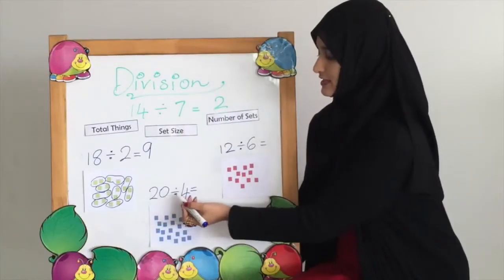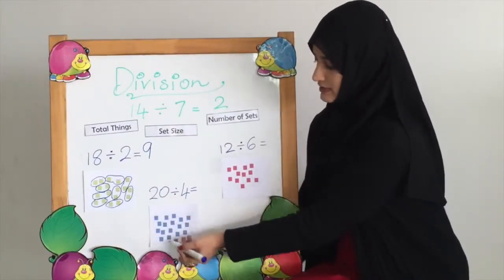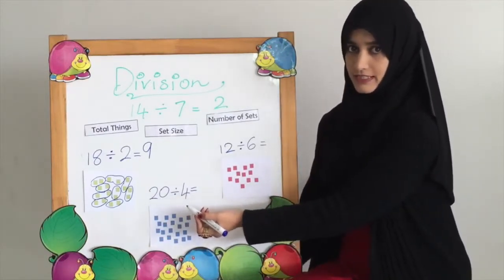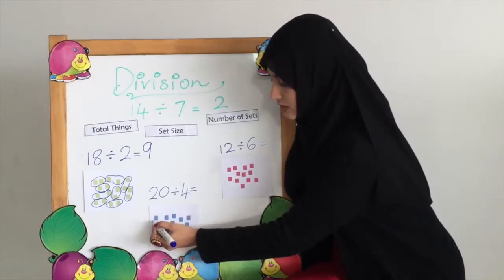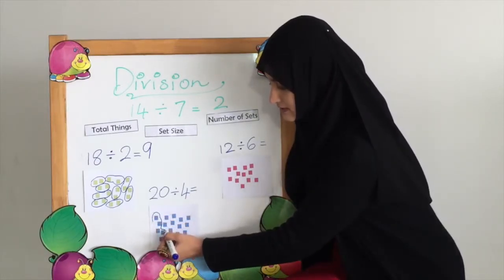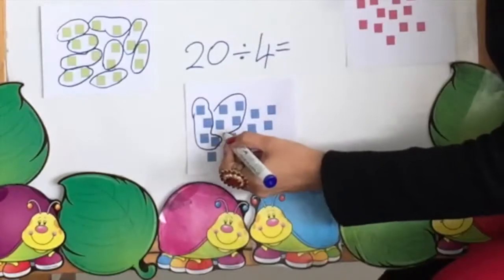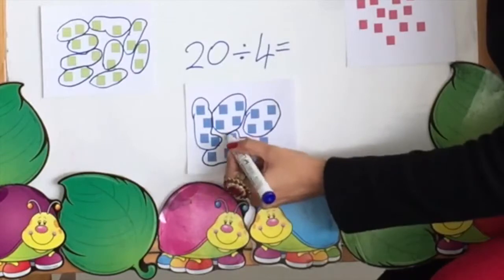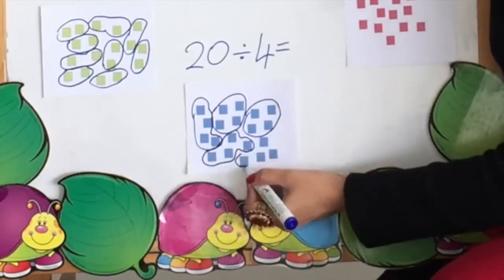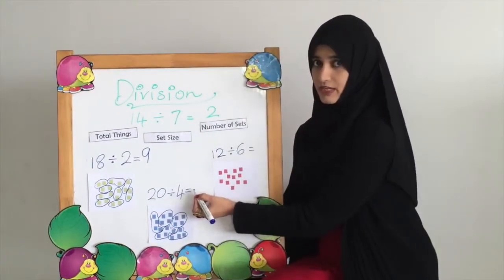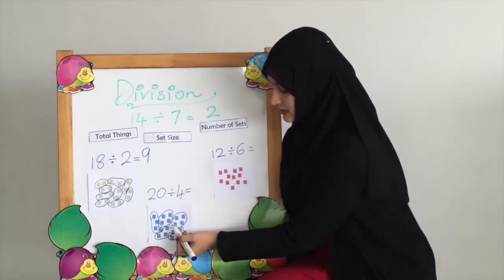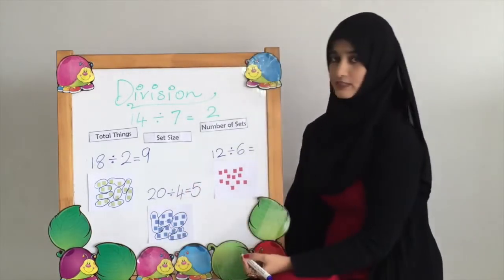The second question is 20 divided by 4. We have 20 squares here. We are going to count 4 and make a set, and will continue till all the squares are in sets. To find our answer, we count how many sets we have: 1, 2, 3, 4, 5. 20 divided by 4 equals 5.